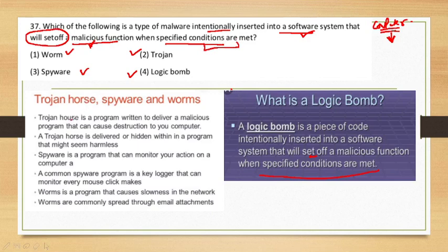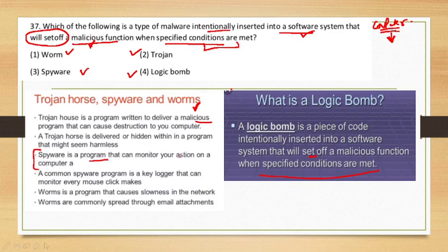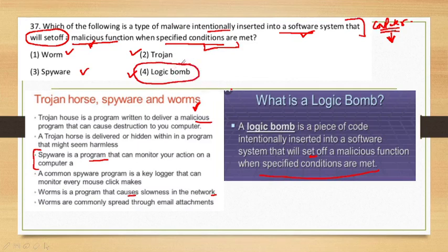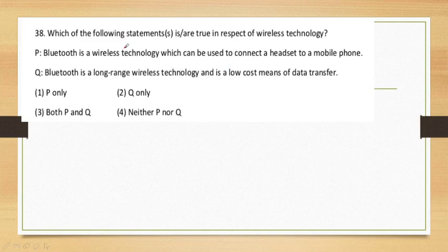Now let's discuss what a Trojan is. Basically, a Trojan horse is a program written to deliver a malicious program that can cause destruction to your computer — it is intended to harm. Spyware is a program that can monitor your actions on a computer. And a Worm is basically a program that causes slowness in the network. So the correct answer is logic bomb, as it is intentionally placed to set off when specified conditions are met.